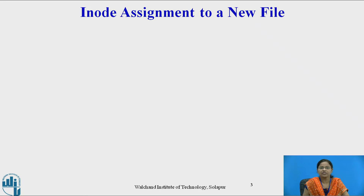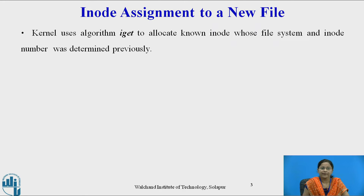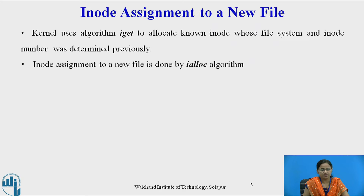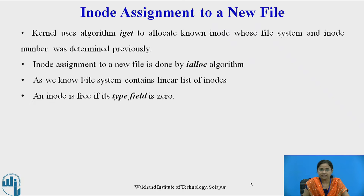Now let us see iNode assignment to a new file. The kernel uses the iGet algorithm to allocate a known iNode whose file system and iNode number was determined previously. iNode assignment to a new file is done by the iAlloc algorithm. As we know, the file system contains a linear list of iNodes. An iNode is free if its type field is 0. If the type field is 0, the iNode is free and it can be assigned to a new file. A non-zero type field indicates that the iNode is assigned to some other file.